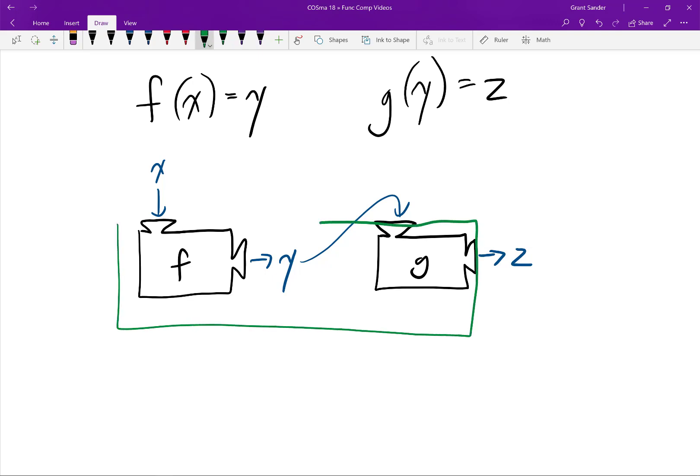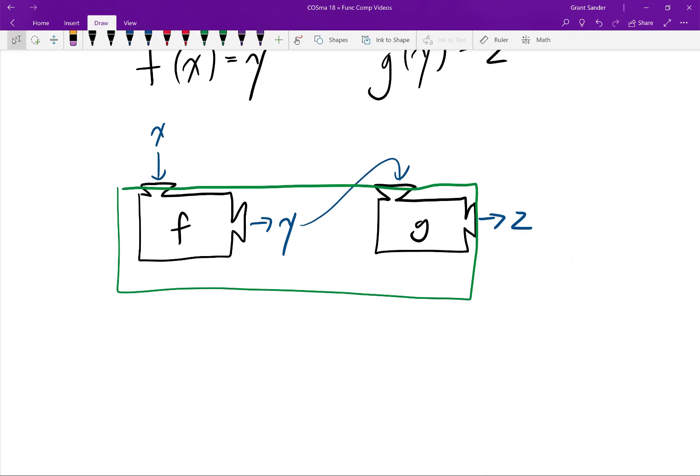So we'll create a new function process that inputs a value of x and then outputs the corresponding value of z. Notice that this function process essentially contains the function processes for f and g. It just encapsulates them into one thing.